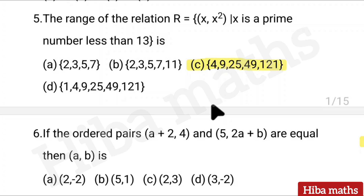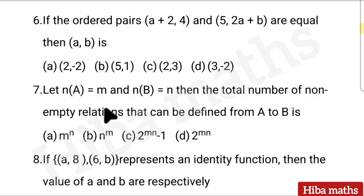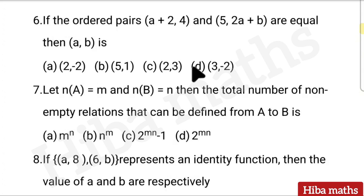If you want a little more time, pause the video, then check. Sixth question: If the ordered pairs (a+2, 4) and (5, 2a+b) are equal, then a and b are — options: (2, -2), (5, 1), (2, 3), (3, -2). Answer: D — (3, -2).